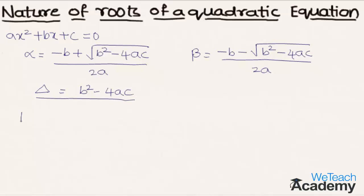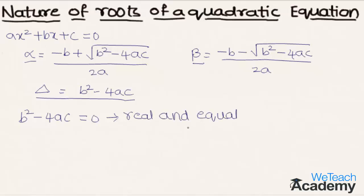When the value of delta, that is b square minus 4ac, is equal to zero, we call the roots alpha and beta real and equal. Substituting zero into the formulas gives us alpha equal to minus b divided by 2a and beta equal to minus b divided by 2a.